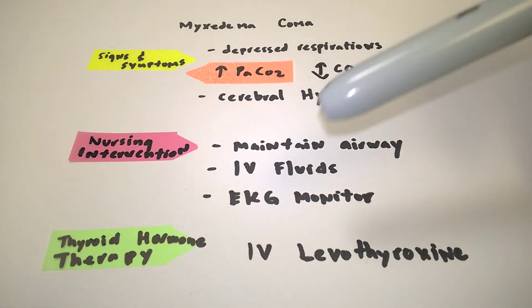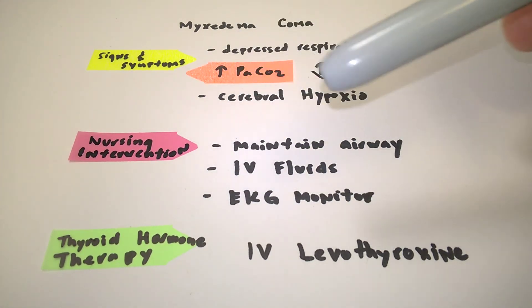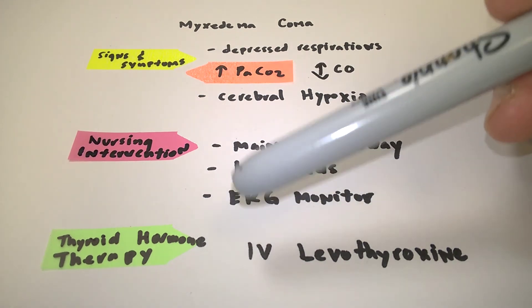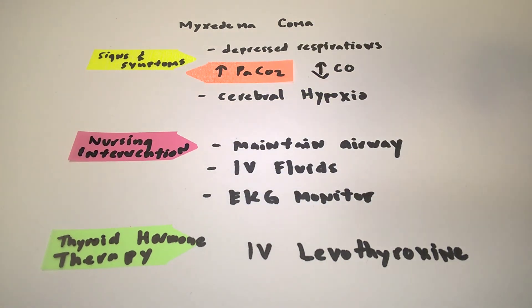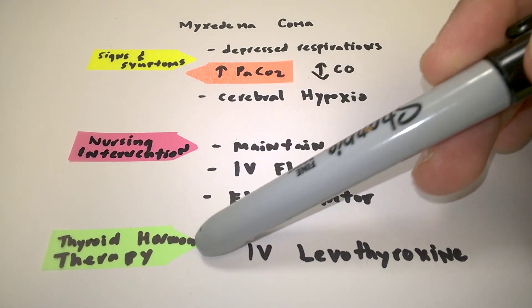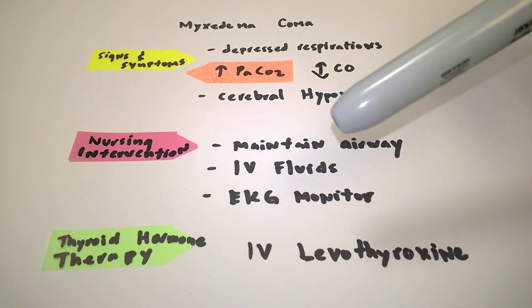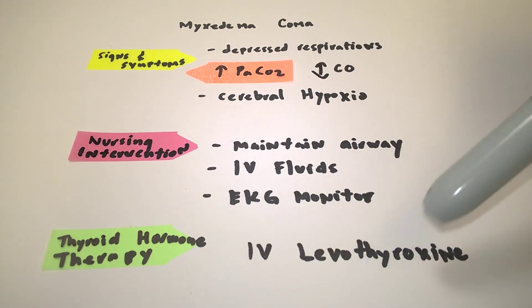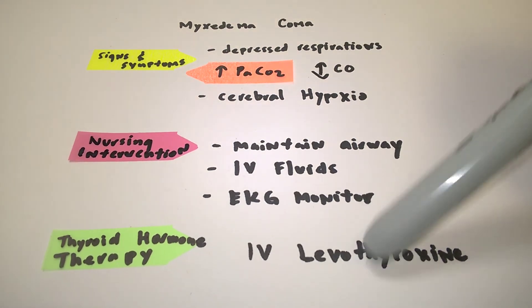In regards to pharmacology, we're going to be giving thyroid hormone therapy. The main NCLEX drug for hypothyroidism and myxedema coma is levothyroxine, or Synthroid.